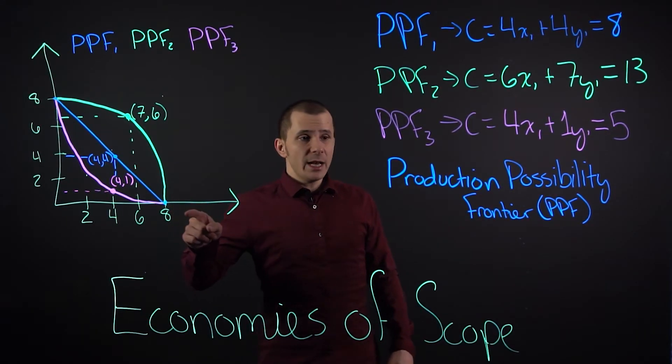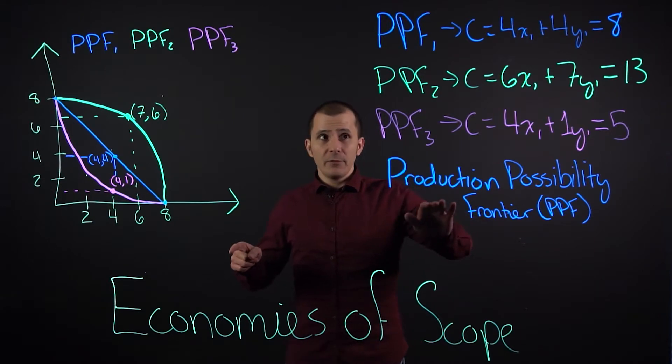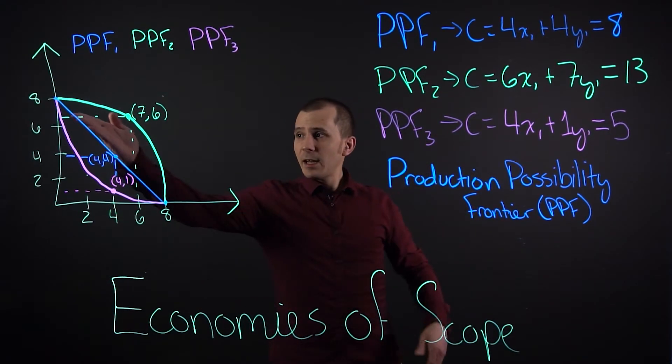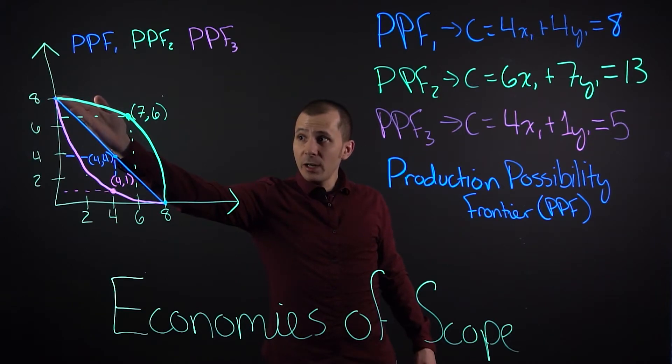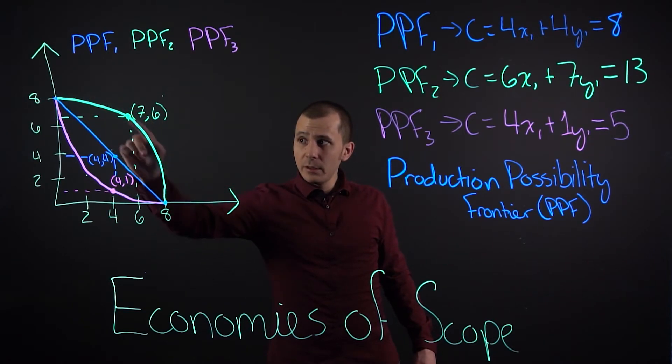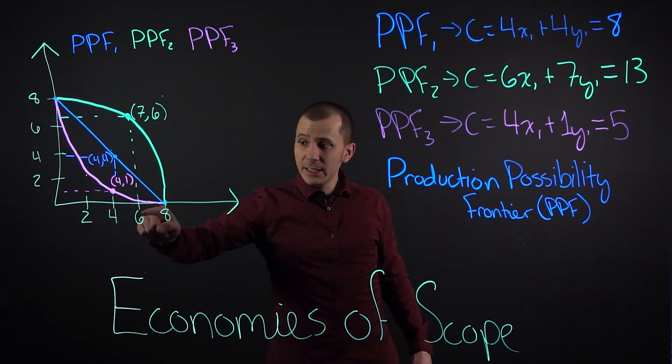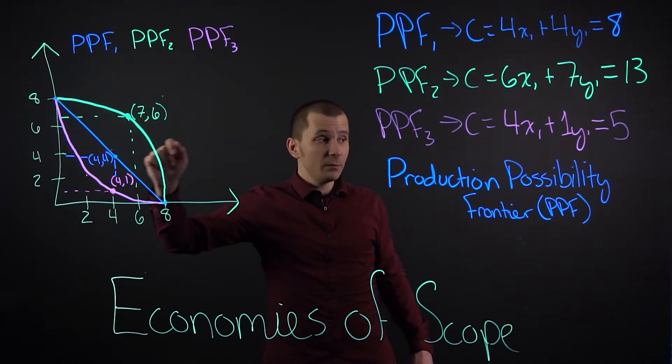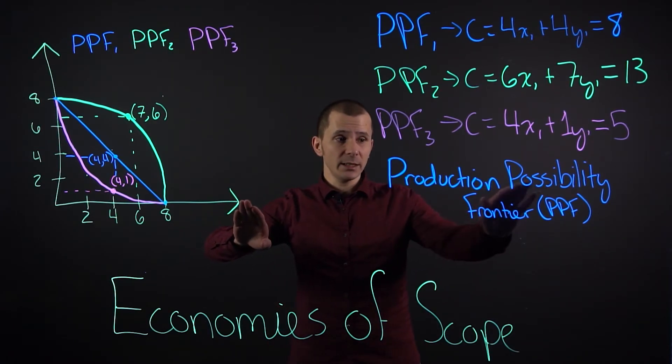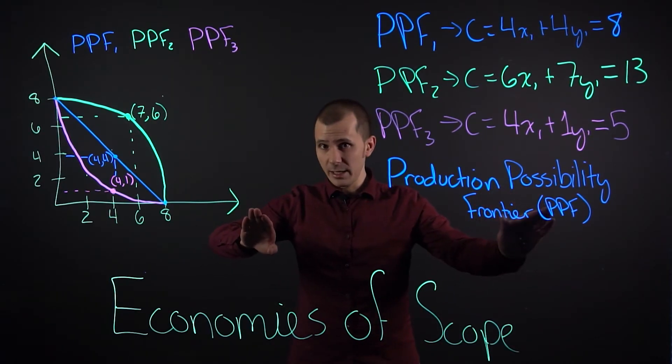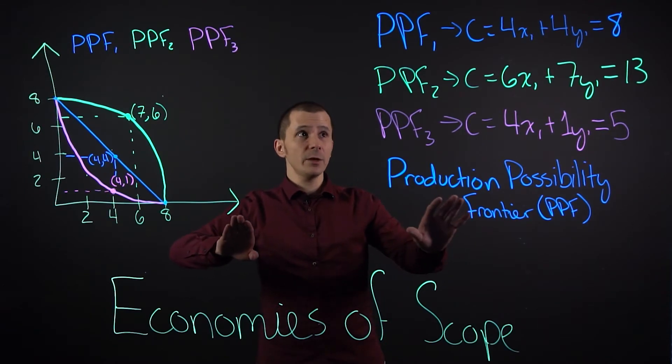Coming back to our PPF or production possibility frontier, we can see that our line here is linear and fixed. In an economy of scope, for example, we have seven and six units of production here. Definitely check out production possibility frontier or PPF in your books or online. It's a very good equation and system.